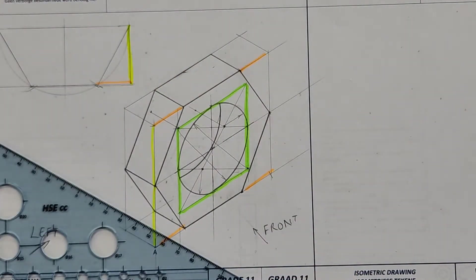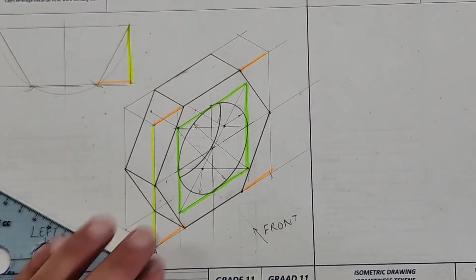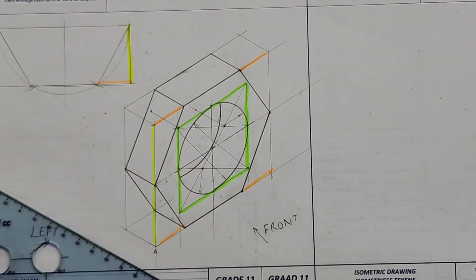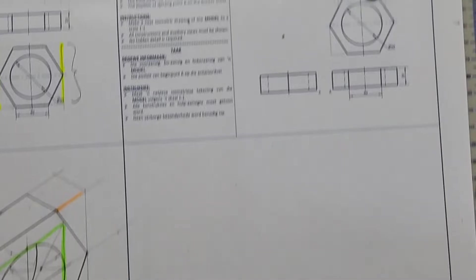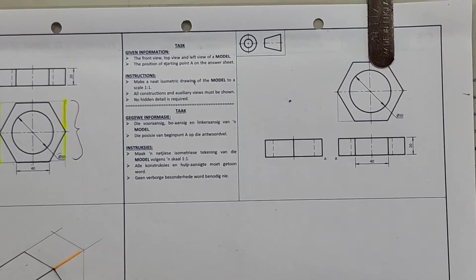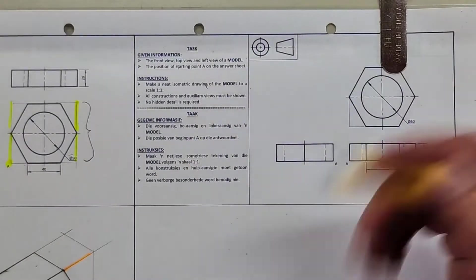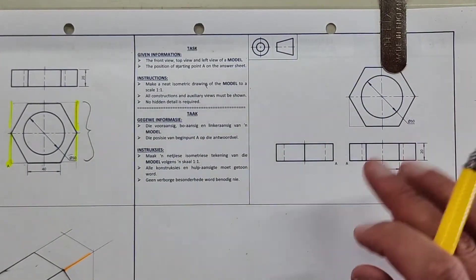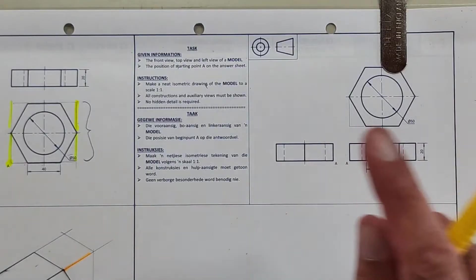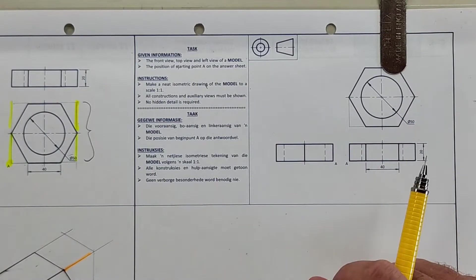That's how you do this isometric. Now I'm going to take these same steps and apply them to the one on the right-hand side. They've given us again three views: the front view, top view, and left view of the model.